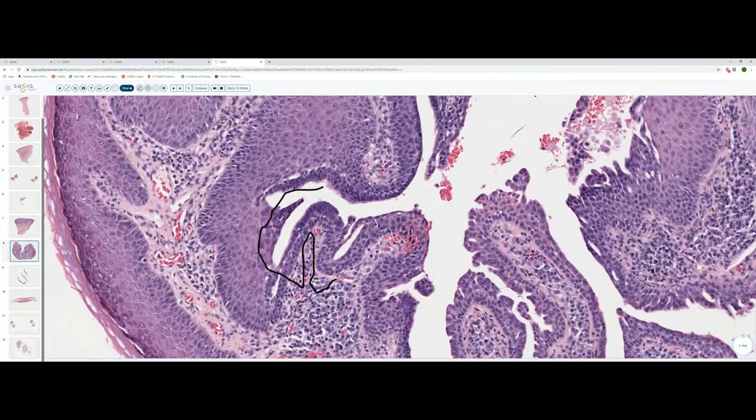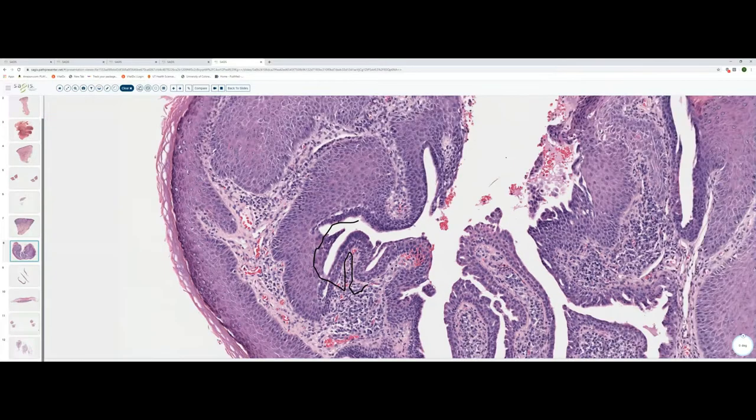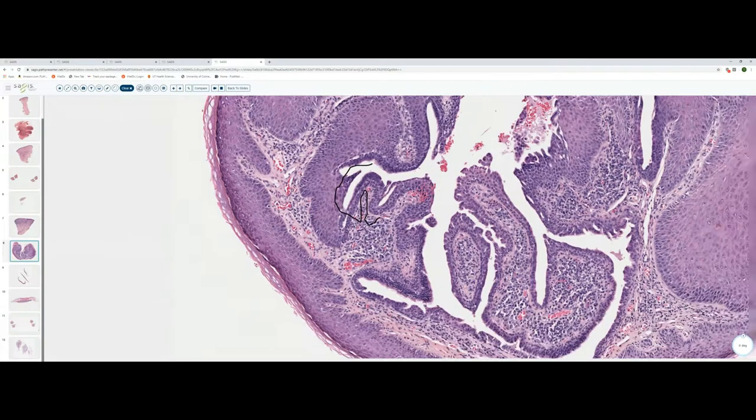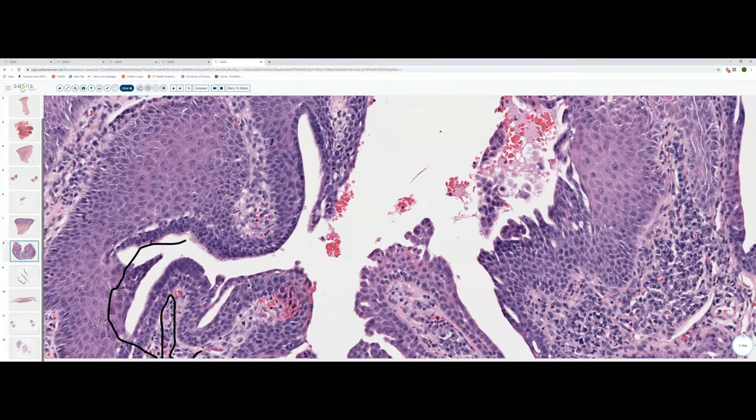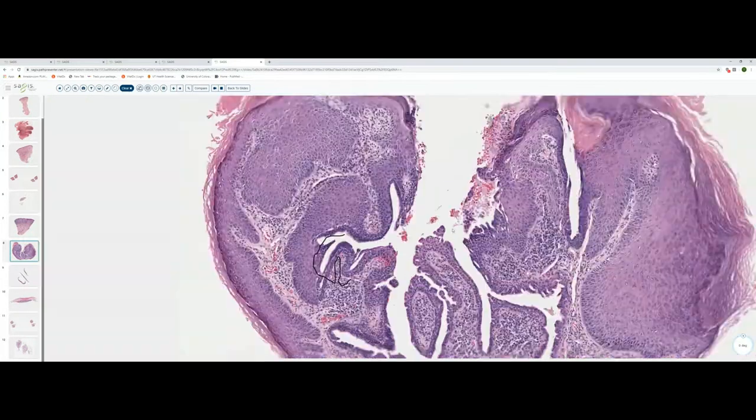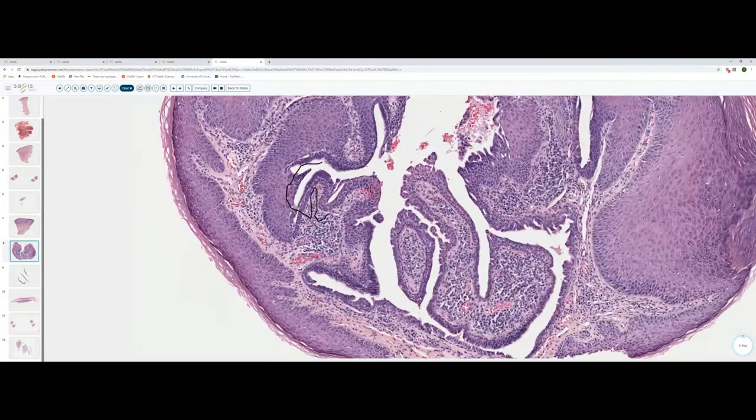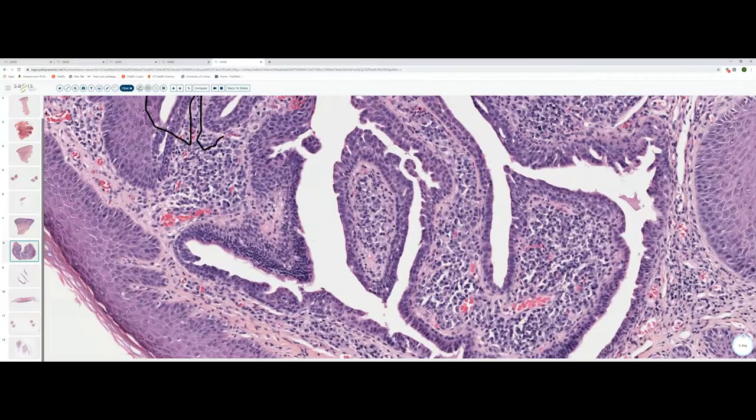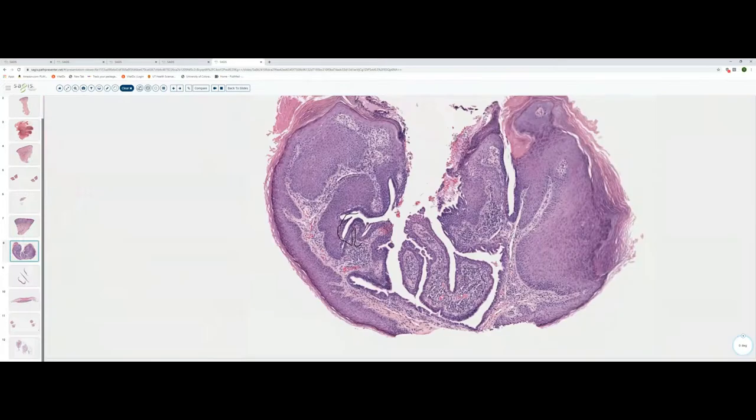Furthermore, the neoplasm is forming these elongated tubular structures that extend down into the dermis. There is some evidence of decapitation secretion. So this is clearly showing apocrine differentiation with the decapitation secretion and the elongated branching tubules. And then of course the key to the correct diagnosis rests in the recognition of plasma cells here within the stroma of these papillary projections. And this is a syringocystadenoma papilliferum.